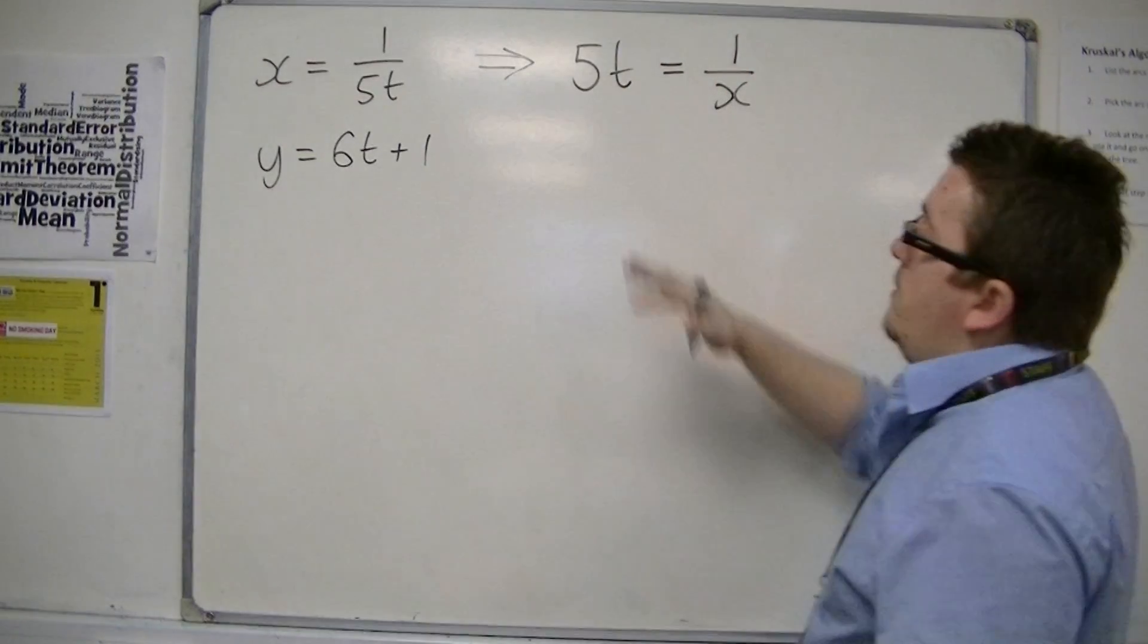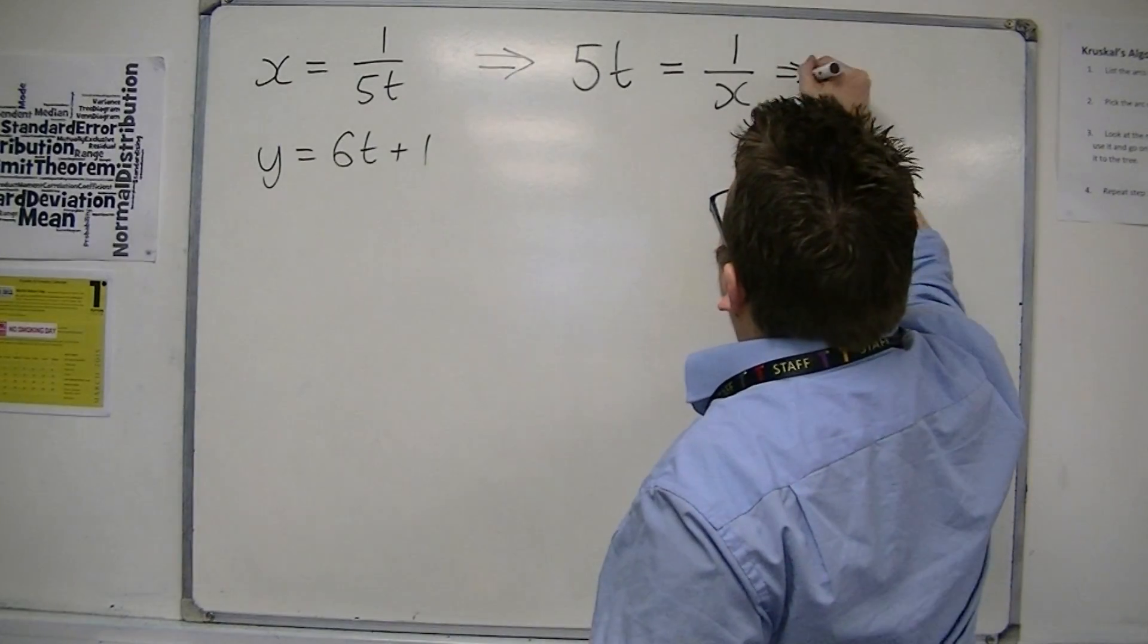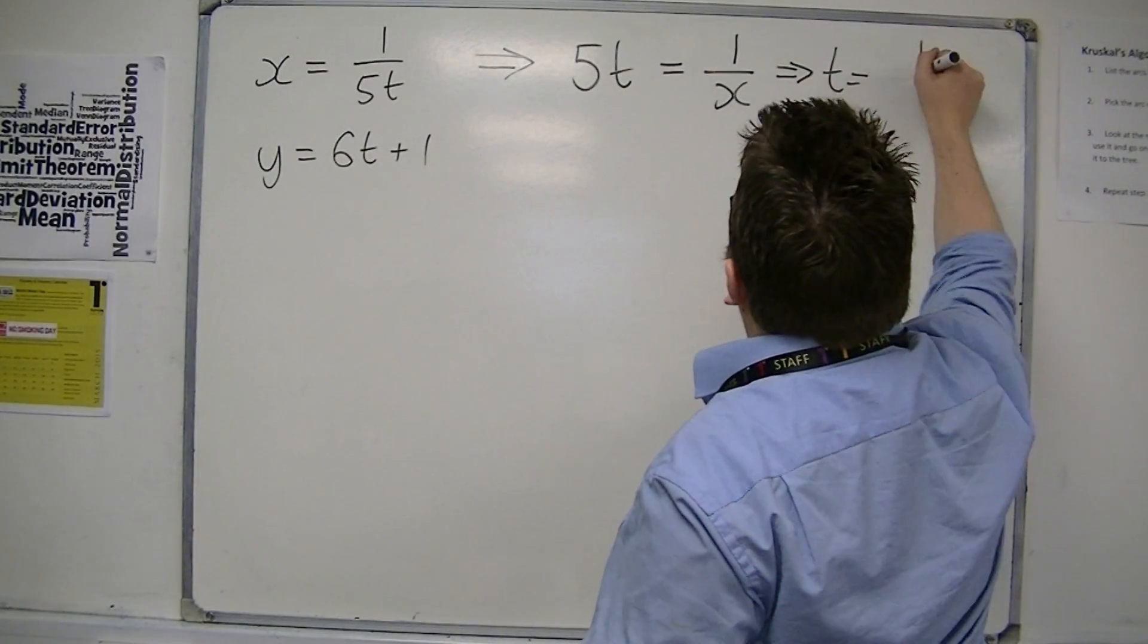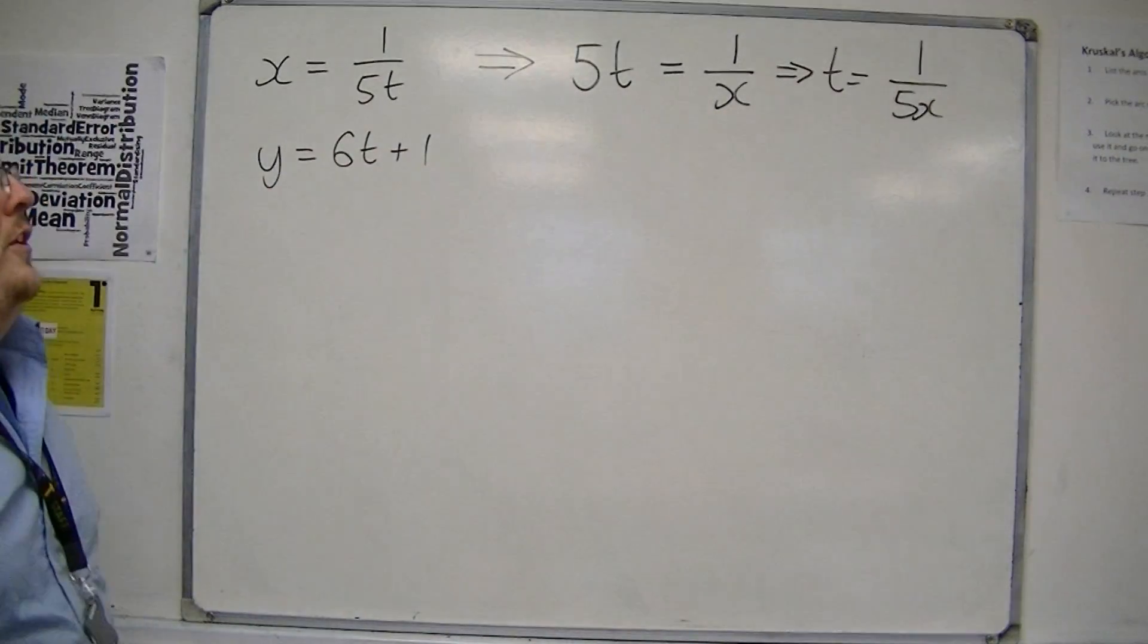So, I can rearrange that to get 5t is 1 over x. So, that means that t is equal to 1 over 5x, dividing both sides by 5.